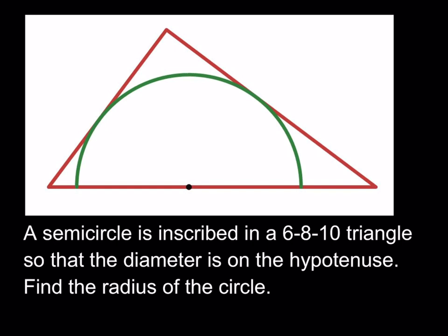A semicircle is inscribed in a 6-8-10 triangle so that the diameter is on the hypotenuse. Find the radius of the circle.